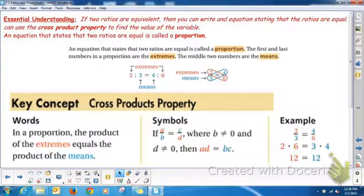The second thing that's essential you understand is that if two ratios are equivalent, then you can write an equation stating that the ratios are equal. You can use the cross product property to find the value of the variable. An equation that states that two ratios are equal is called a proportion.